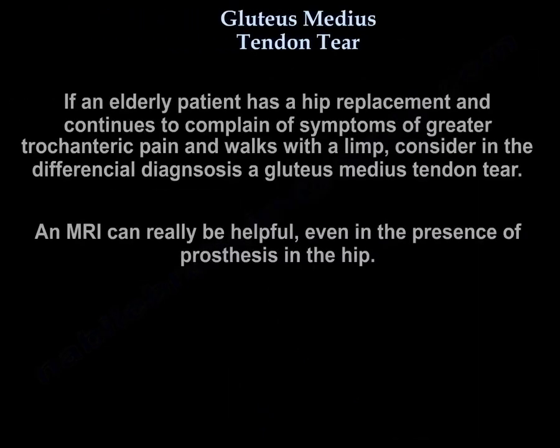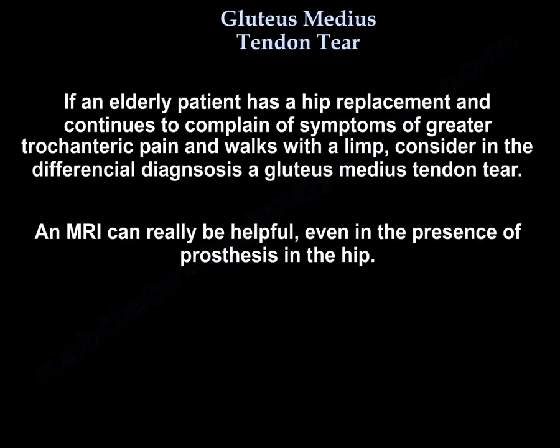If an elderly patient has a hip replacement and continues to complain of symptoms of greater trochanteric pain and walks with a limp, consider in the differential diagnosis a gluteus medius tendon tear. An MRI can be helpful even in the presence of a prosthesis in the hip.